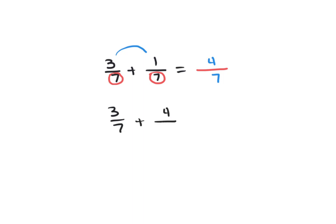What about if we have 3 over 7 plus 4 over 5? How do we add them? Rani says: change the denominator to 35, because that's the common number between 7 and 5 — multiply 7 times 5 and 5 times 7. Yes, you can do that.